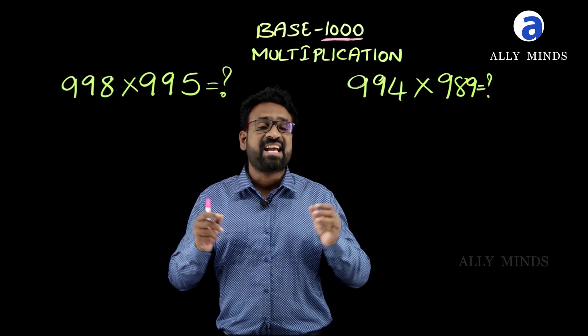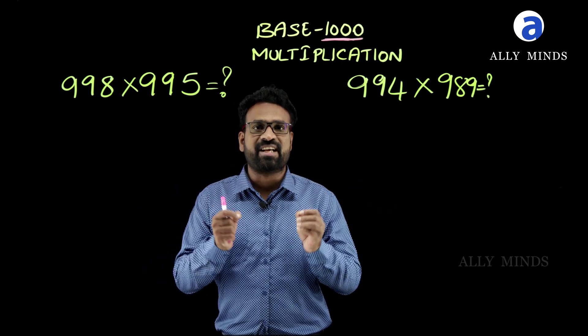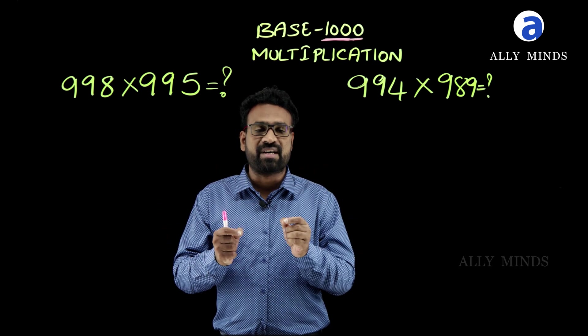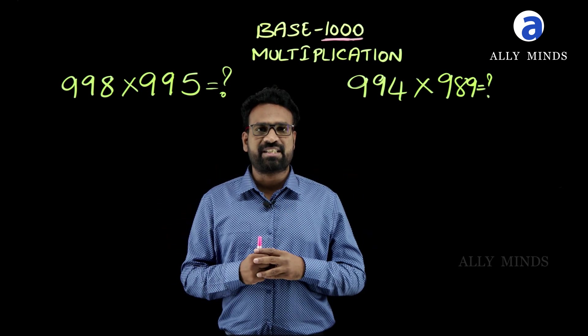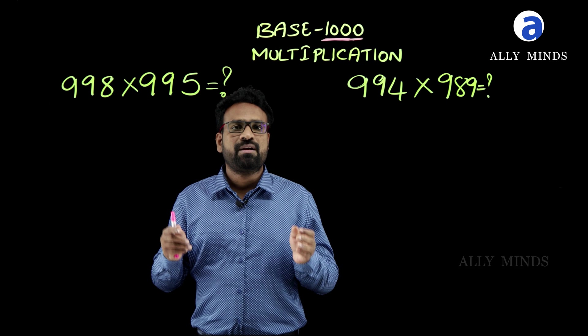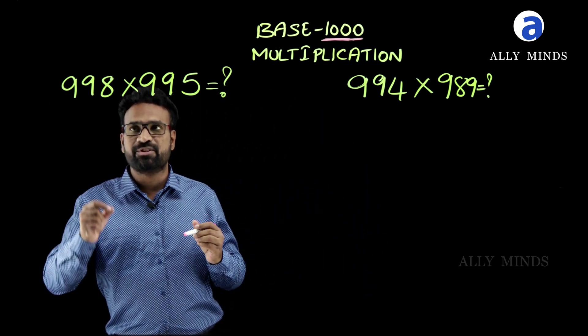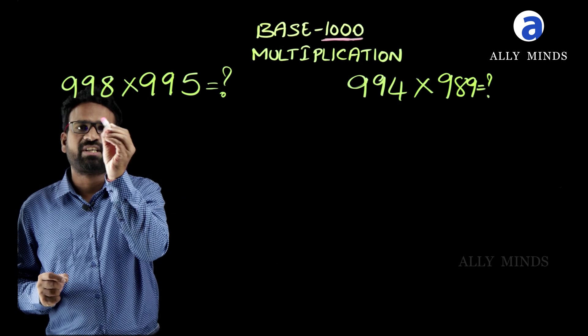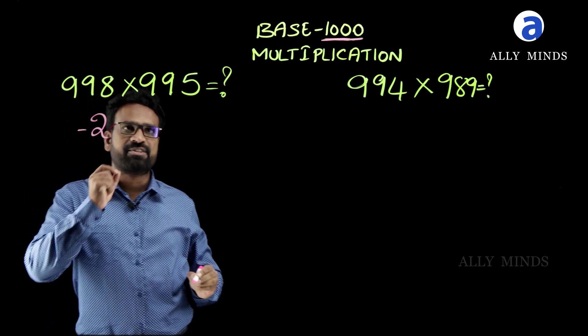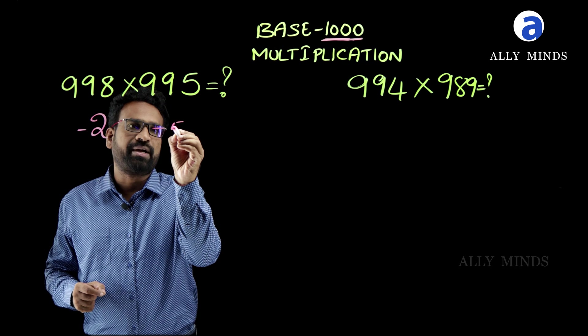Hi everyone, welcome to AliMinds. In this video, you are going to learn how to multiply any two numbers which are very close to base 1000. First of all, think of the difference between the given numbers and the base 1000. Here, the difference between 998 and base 1000 is 2, and the difference between 995 and base 1000 is 5.